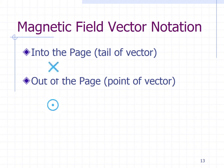We need to understand magnetic field vector notation. Into the page vectors would be denoted by an X or sometimes an X inside a circle, which is supposed to be the tail of the vector. And out of the page would be the arrowhead of the vector as shown. You've seen these in introductory mechanics as well.